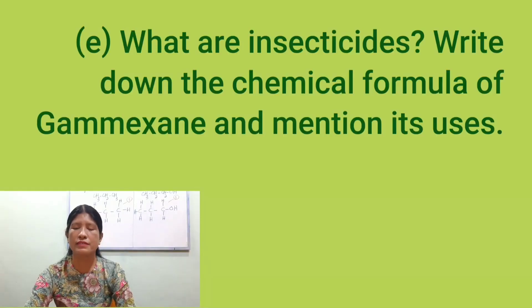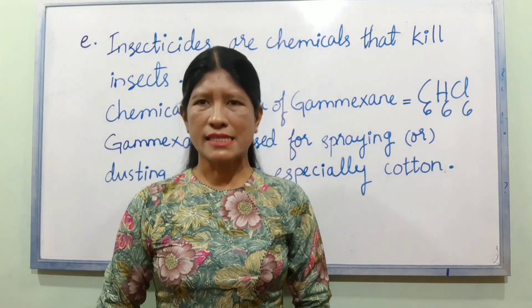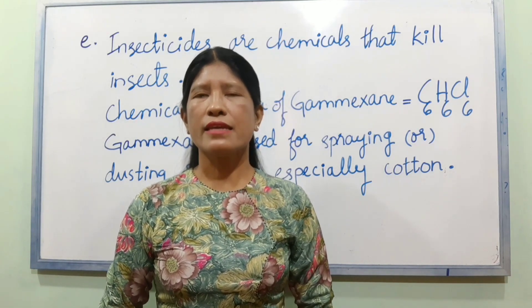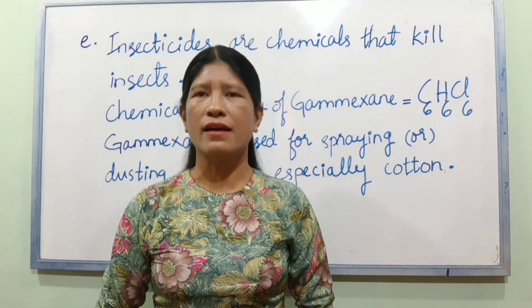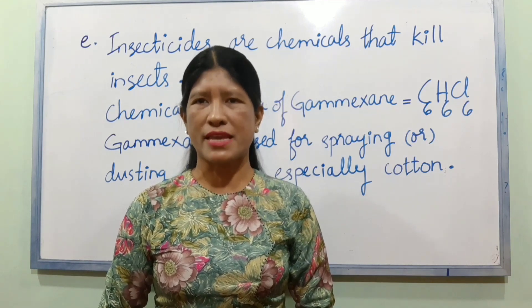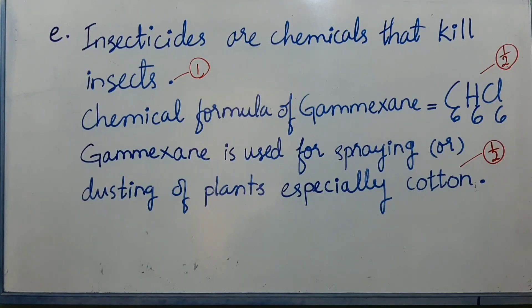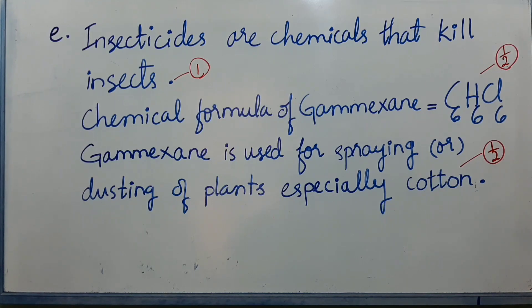Number E: What are insecticides? Write down the chemical formula of gamaxin and mention its uses. Insecticides are chemicals that kill insects. The chemical formula of gamaxin is C6H6Cl6. Gamaxin is used for spraying or dusting of plants, especially cotton.